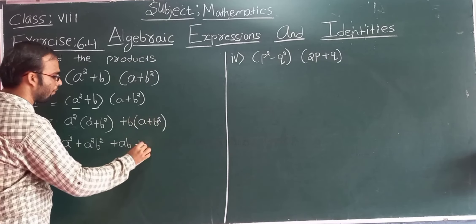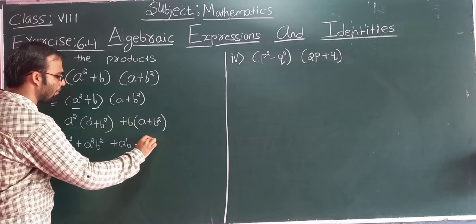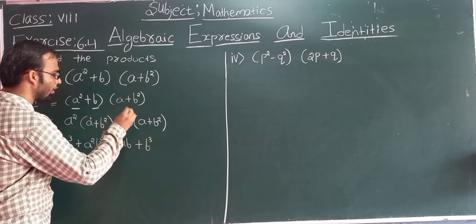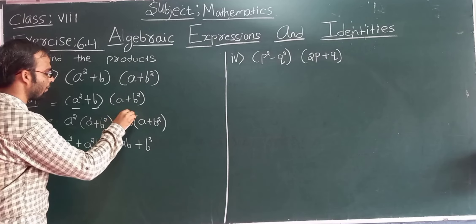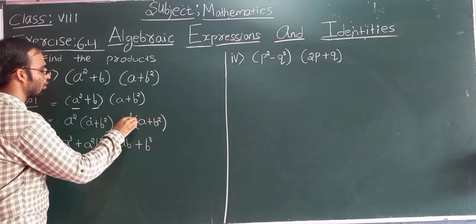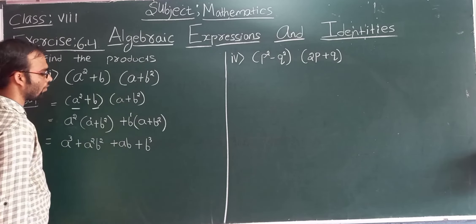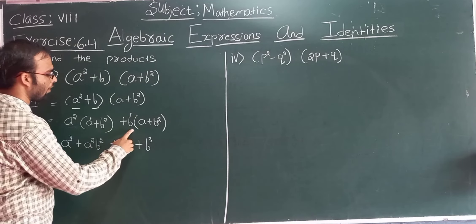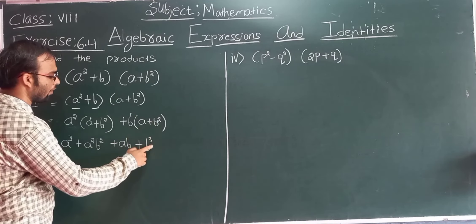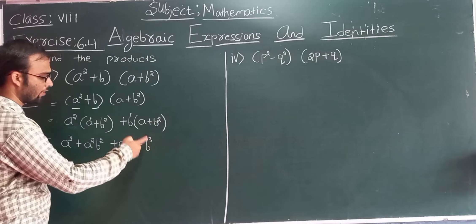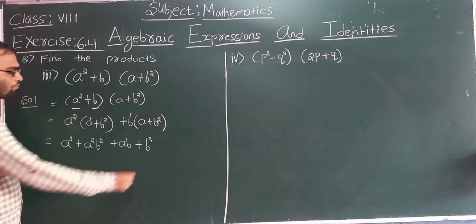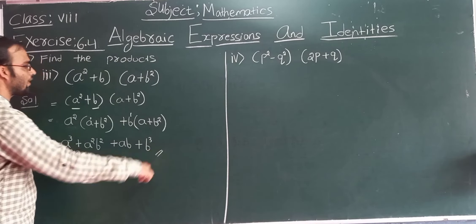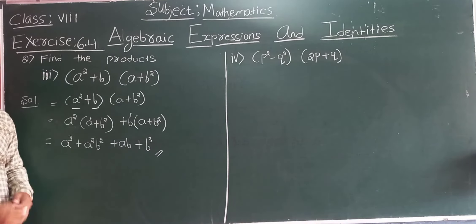Then b into a gives ab, and b into b squared gives b cubed, because nothing means the power is 1, so b into b squared is b to the power 3. So this will be the solution for the third problem: a cubed plus a squared b squared plus ab plus b cubed.